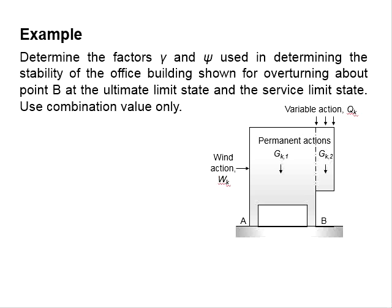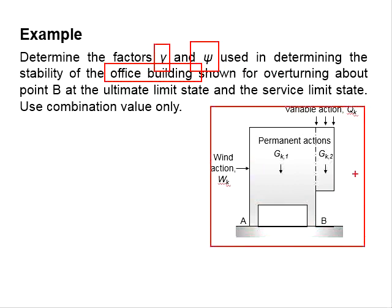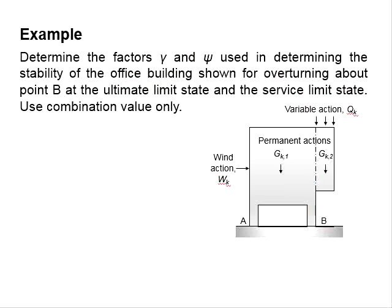Let's try an example using the factors gamma and psi to determine the stability of a structure under overturning. The question asks to determine the factors gamma and psi used in determining the stability of an office building shown in the figure, for overturning about point B at the ultimate limit state and serviceability limit state. It is asked to use the combined value only.